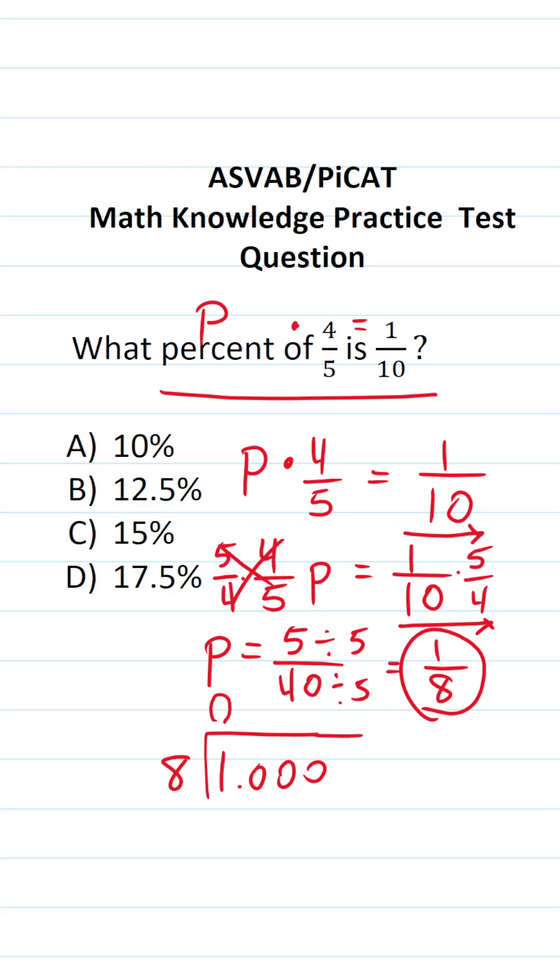Eight doesn't go into one, so put a zero above the one. How many times does eight go into ten? Well, bring that decimal up. Eight goes into ten one time without going over. Eight times one is eight. Ten minus eight is two. Drop down this zero.